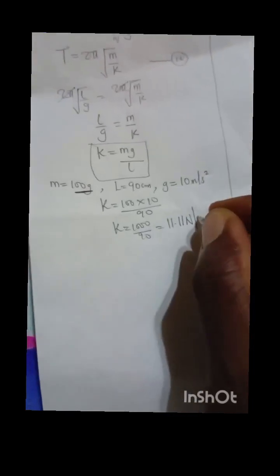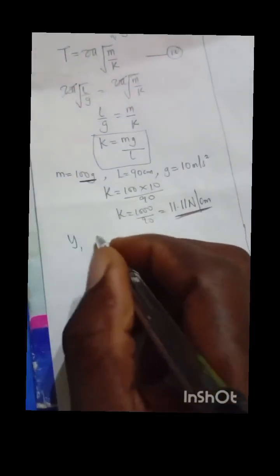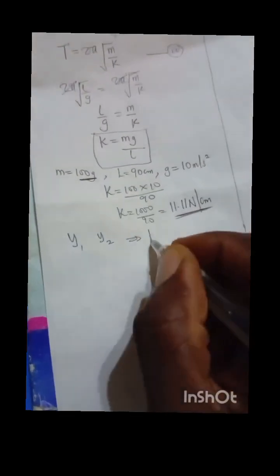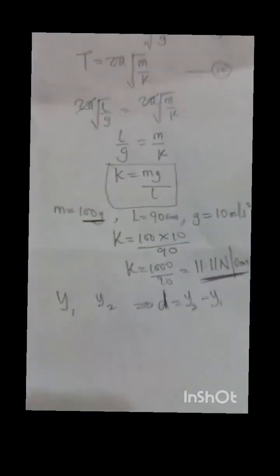When you do it right, I'm having 1000 / 90, which is finally 11.11 newton per centimeter. This is my spring constant. In the question they will ask you to find K. This is the K they are talking about. From this K now I can deduce the value of my Y1, my Y2, and when I get my Y1 and Y2, I can say D = Y2 - Y1.